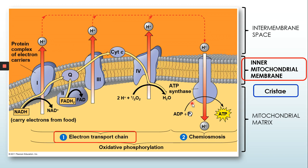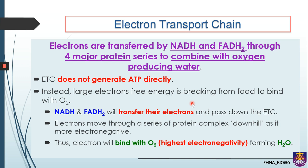Technically there are two distinct parts of OP: the electron transport chain (ETC) and chemiosmosis. ETC is a process where electrons are transferred by NADH and FADH2 through four major protein complexes in order to combine with oxygen, producing water. The electrons carried by NADH and FADH2 from previous stages pass down the electron through the four major proteins, and at the end the electron must combine with oxygen. After oxygen combines with the electron, it produces water.